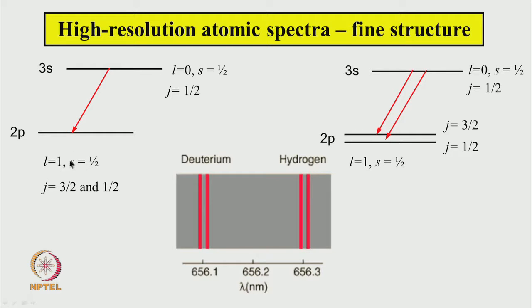Similarly, for the 2p state l = 1 and s = 1/2; these two angular momenta combine to give j = 3/2 and j = 1/2. So the 2p state now has two energy levels. Earlier, 3s and 2p were connected by only one transition, but because 2p can now have two values of total angular momentum — j = 3/2 and j = 1/2 — we get two transitions. These two transitions are exactly what is seen in the spectra of hydrogen and deuterium, explaining the fine structure through the introduction of spin angular momentum s = 1/2.